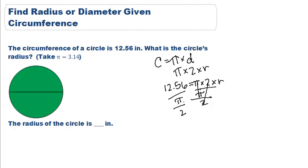So 12.56 divided by pi divided by 2 gives us our radius. When we solve it all out, we get a radius of 2 inches.